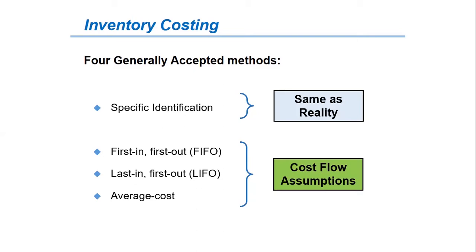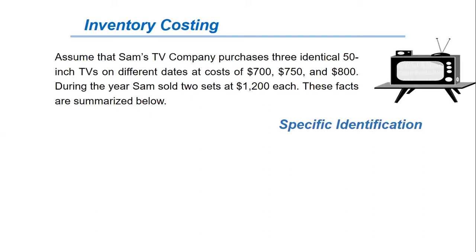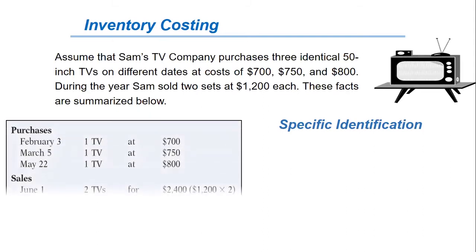The term cost flow assumptions refers to the manner in which costs are removed from a company's inventory and are reported as the cost of goods sold. If specific identification is used, there is no need to make an assumption. To explain the specific identification method, we assume that Sam's TV company purchases three identical 50-inch TVs on different dates at costs of $700, $750, and $800.